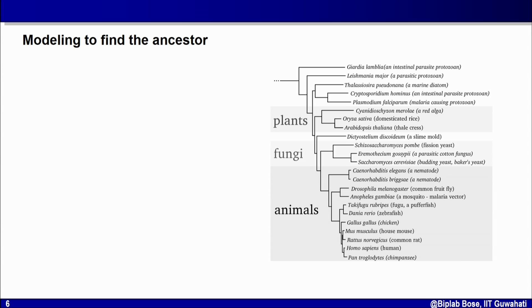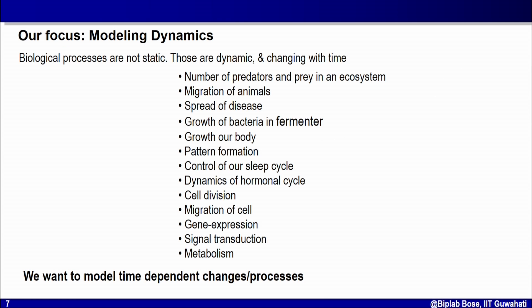Another type of model very common in biology is the phylogenetic tree. You know the sequences of certain genes right now and want to know how they have evolved and how they are connected to each other, so you build a mathematical model called a phylogenetic tree to understand the evolution of those genes. These types of models are very common in biology. There is another type of model that is the focus of our course: the dynamical model.